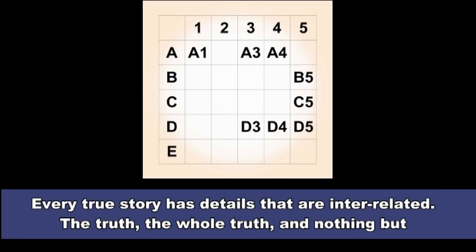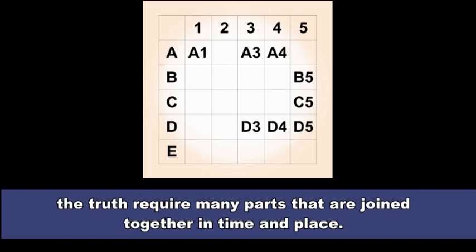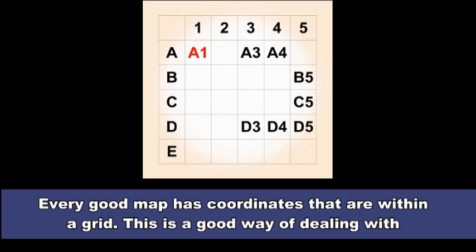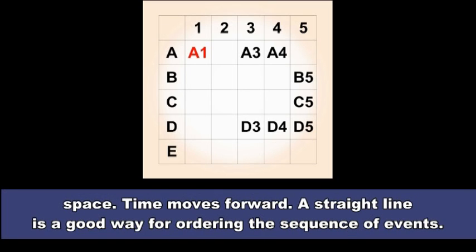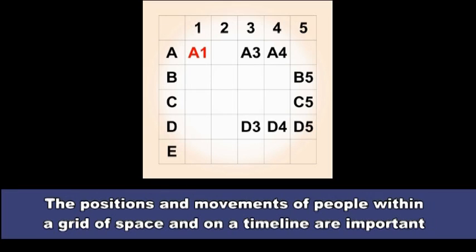Every true story has details that are interrelated. The truth, the whole truth, and nothing but the truth require many parts that are joined together in time and place. Every good map has coordinates that are within a grid. This is a good way for dealing with space. Time moves forward. A straight line is a good way for ordering the sequence of events.